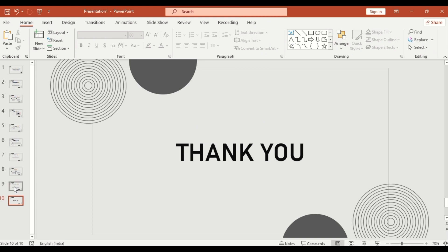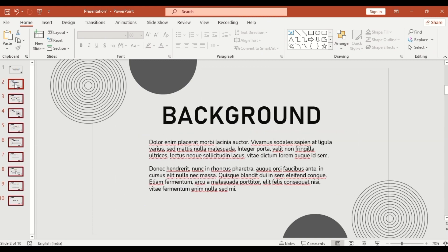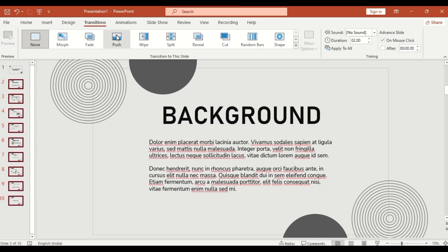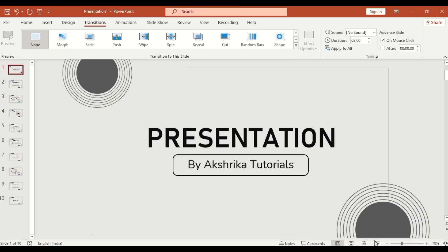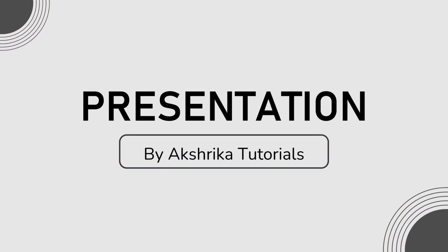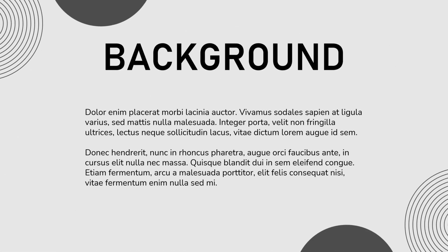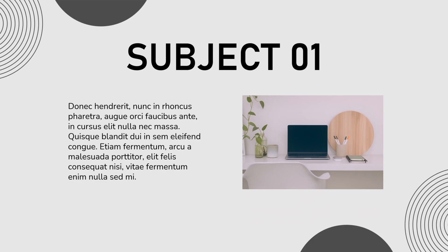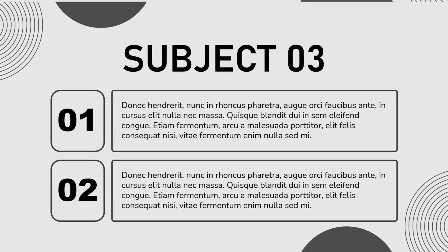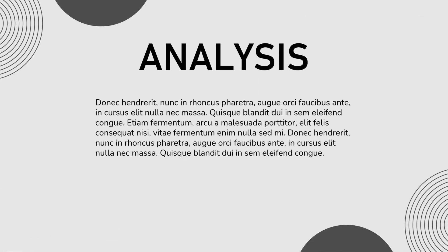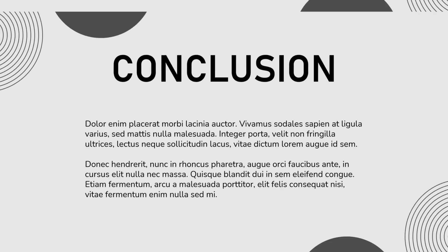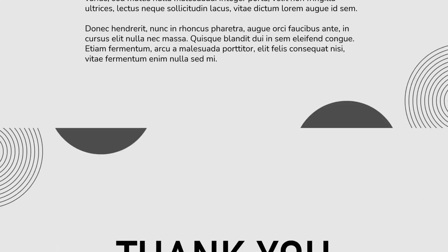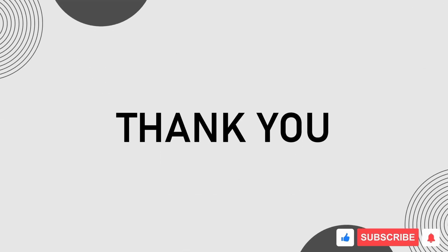Now select all slides, go to the Transitions tab and apply Push transition to all. Go to the first slide, click on Slide Show and enjoy the smooth modern flow of your new presentation. And there you have it — a complete 10 slide modern PowerPoint presentation built entirely from scratch with stylish elements and clean animations. The full template is linked in the description below. If you found this tutorial helpful, make sure to like this video and subscribe to Aksharika Tutorials for more amazing PowerPoint content.